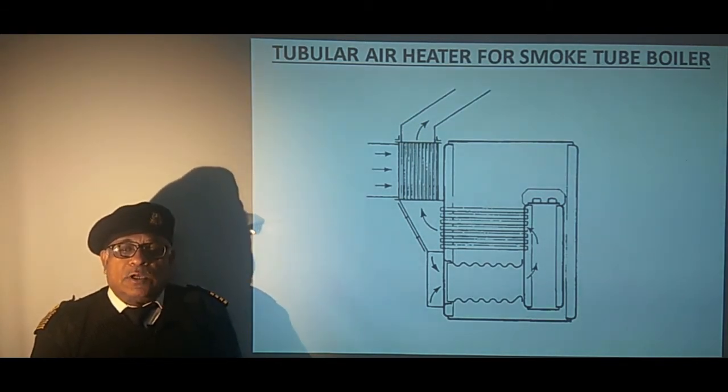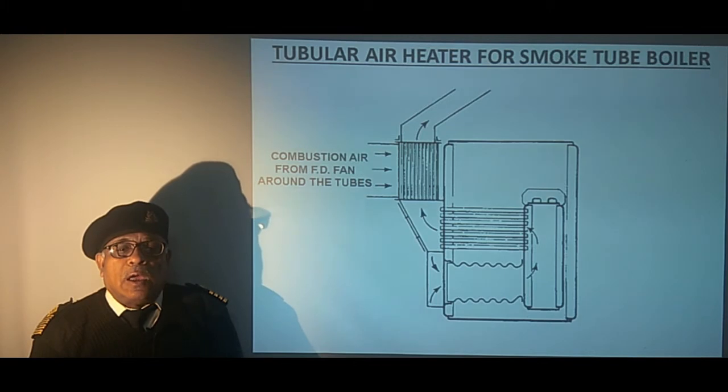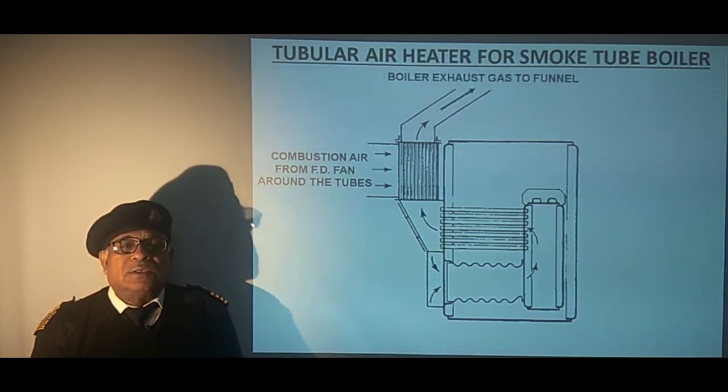Air after passing around the smoke tubes enter the air register through plenum whereas flue gas after heating the air leaves through the funnel which we can see in the sketch. Combustion air from FD fan around the tubes takes away the heat from the flue gases which are passing in the tubes and the exhaust gases coming out from the air heater leave the boiler and go to the funnel.